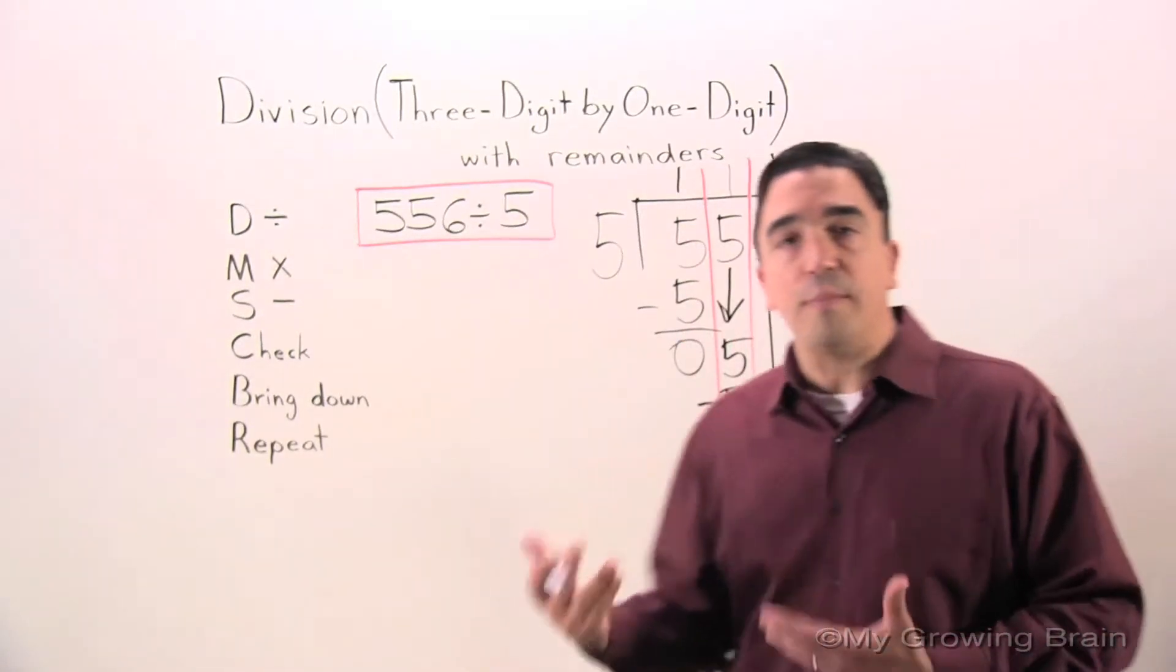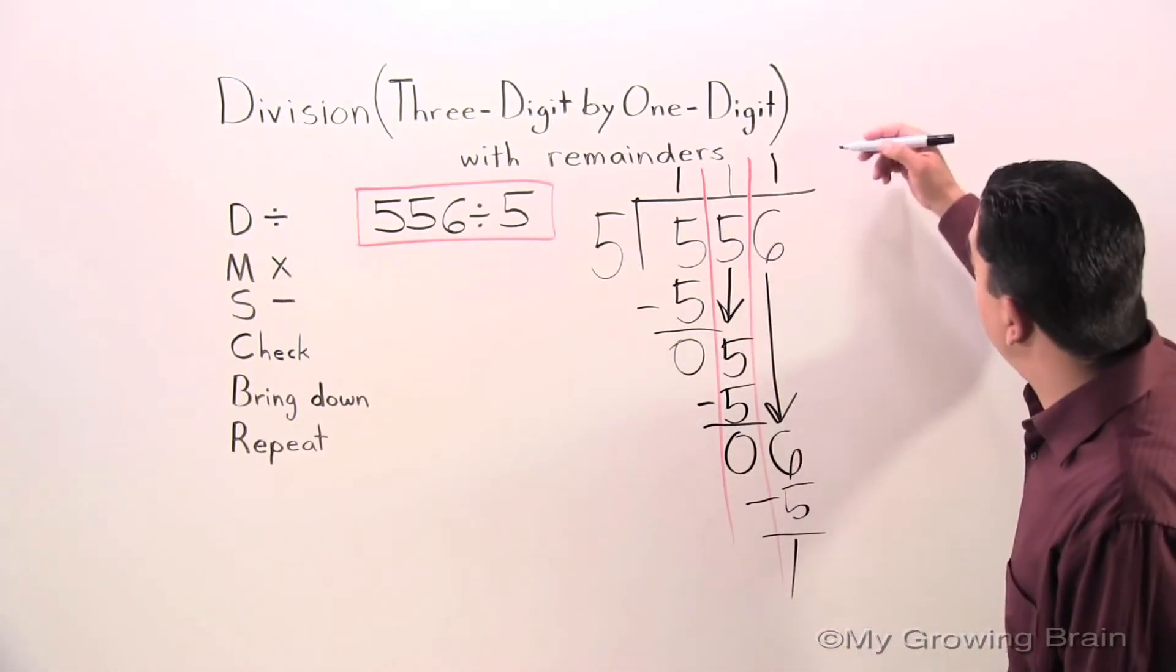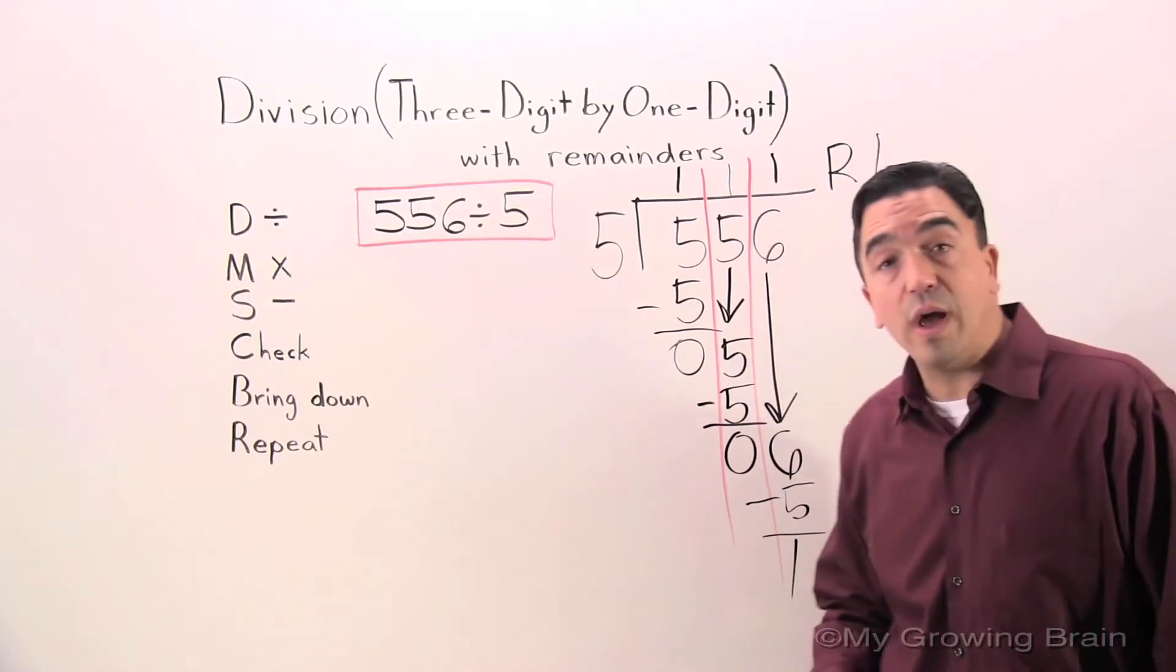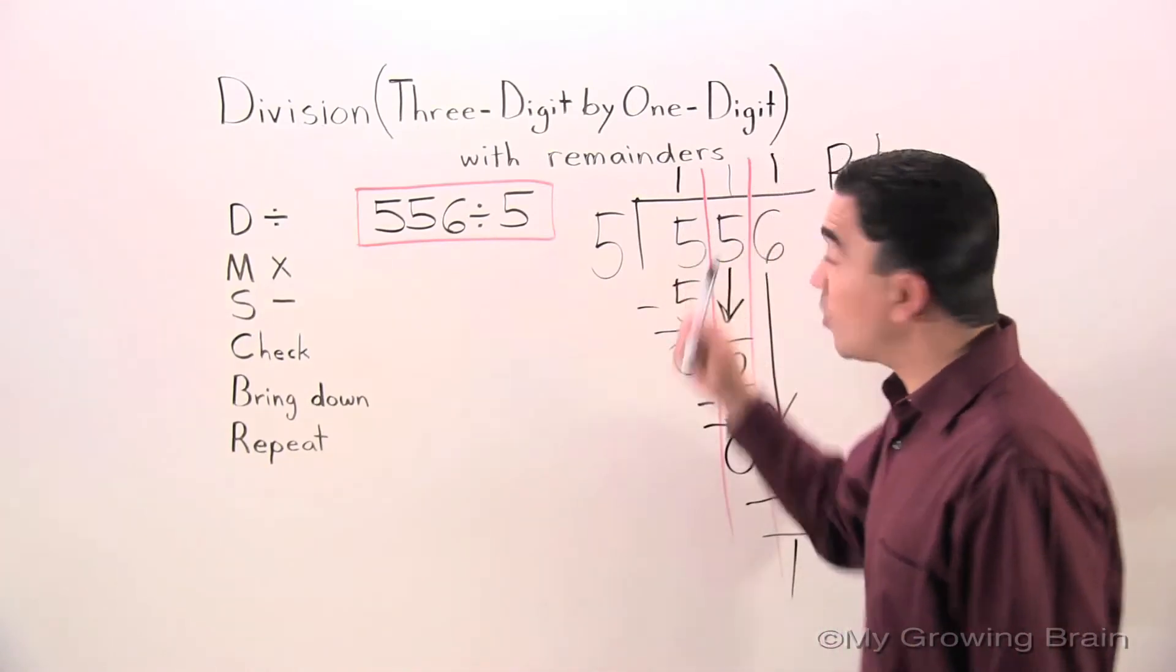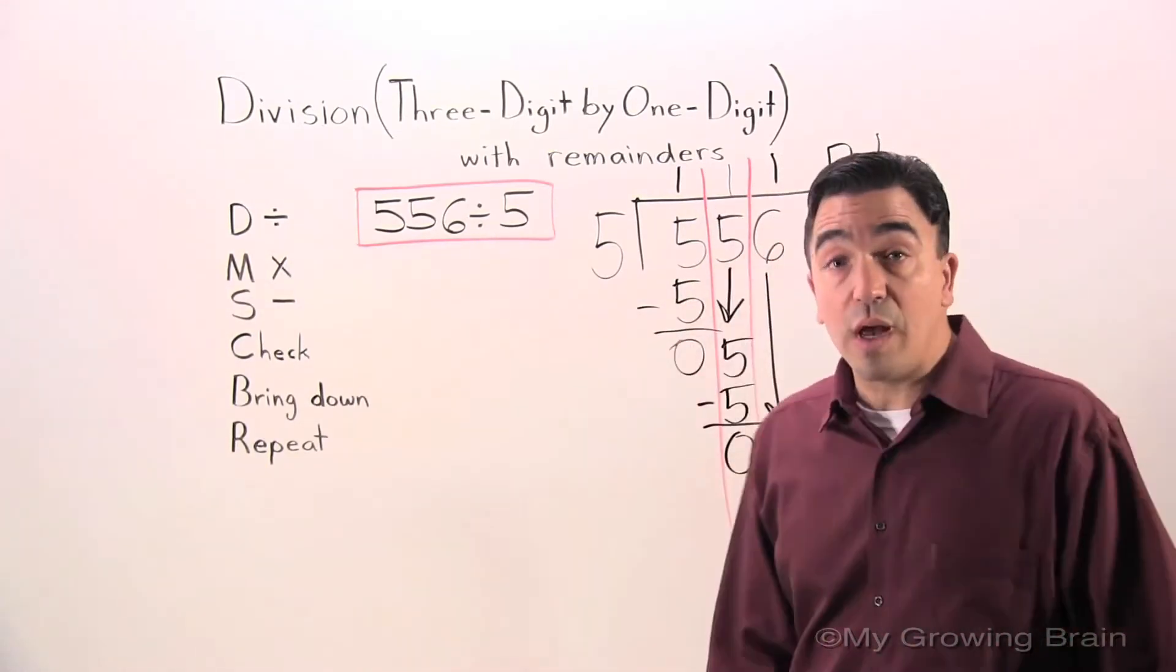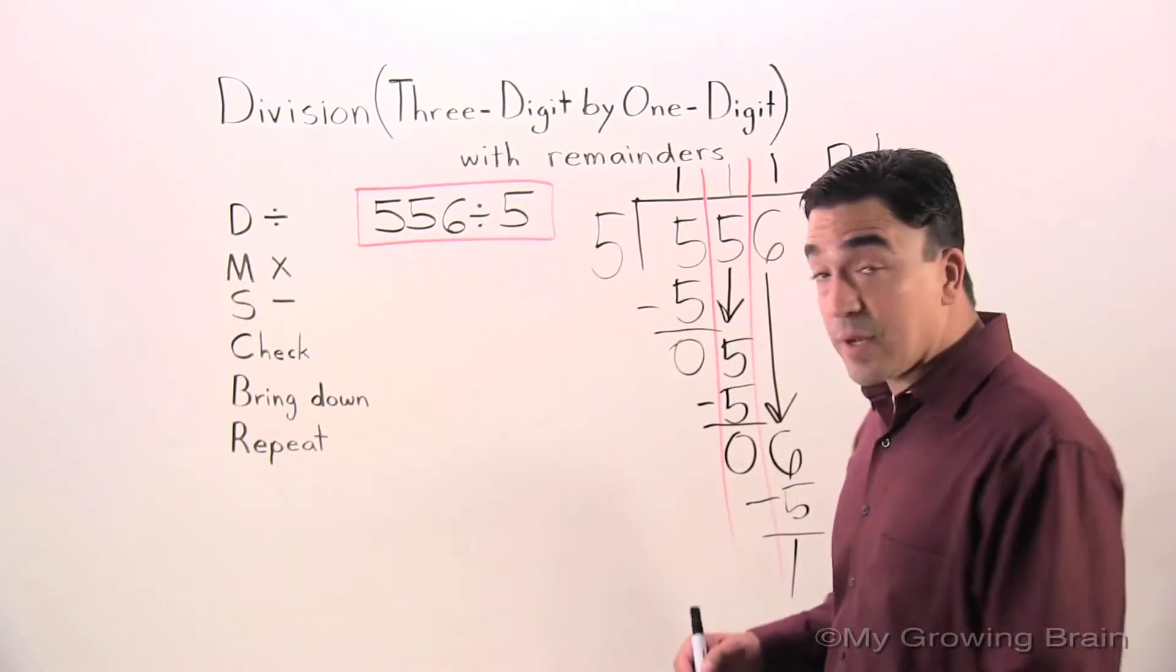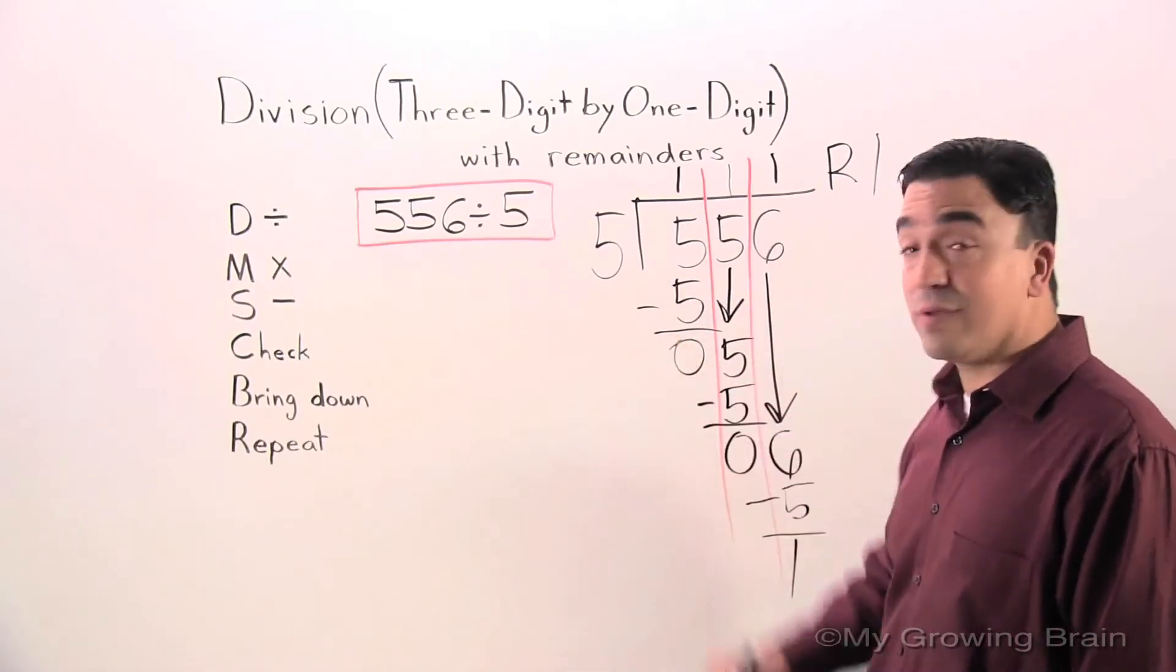That means we are done with our problem. However, we do have a remainder. So we have to put a big R up here and write remainder one. But we're not done, folks. We do have a quotient of 111, remainder one. But we need to check our work. I'm going to do this by multiplying the quotient times the divisor.